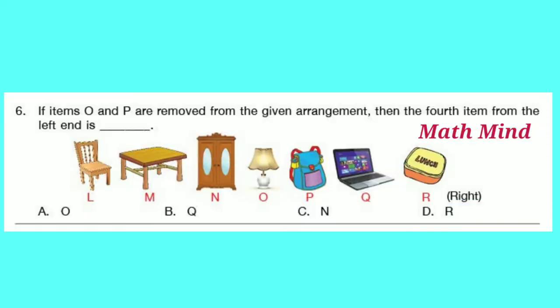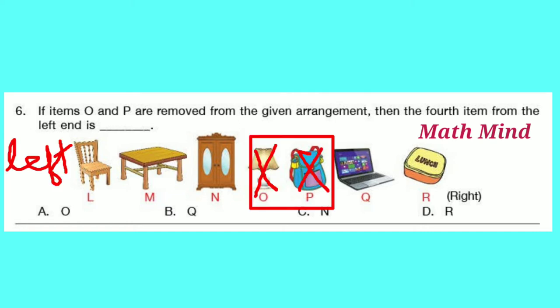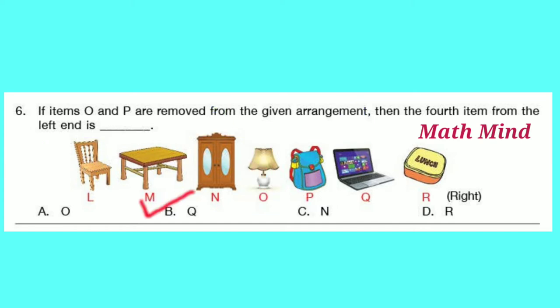Question number 6: If items O and P are removed from the given arrangement, then the 4th item from the left end is dash. This is the left end. We have to remove O and P. From the left end, the 4th item is Q — a laptop. So option B is correct.